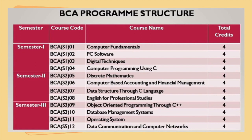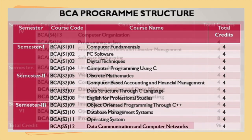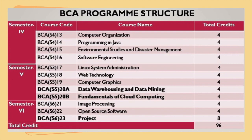The third semester consists of courses like object oriented programming through C++, database management systems, operating system, and data communication and computer networks. In the fourth semester of the BCA program, we have courses like computer organization, programming in Java, environmental studies and disaster management, and software engineering.